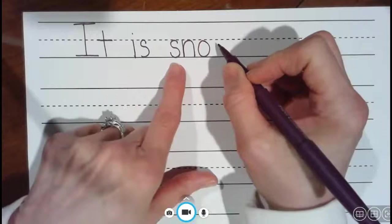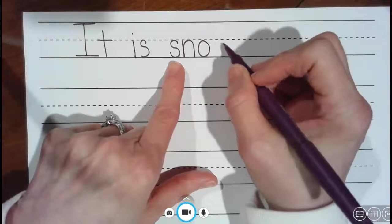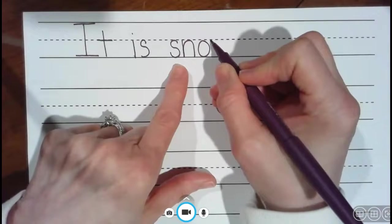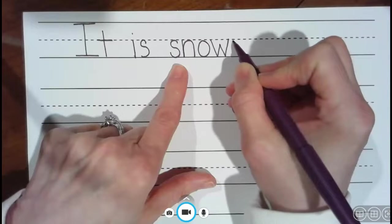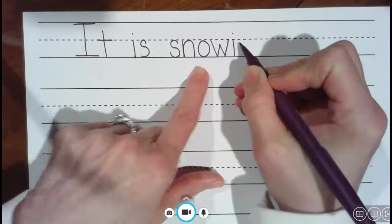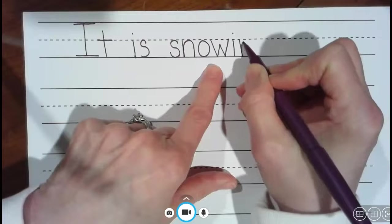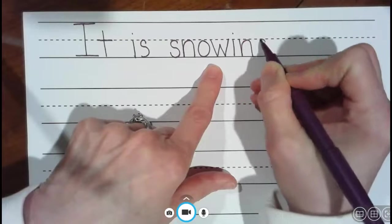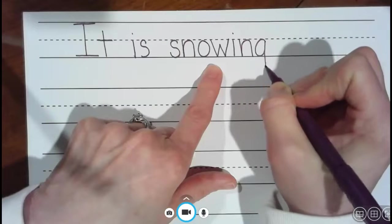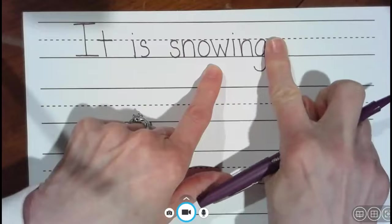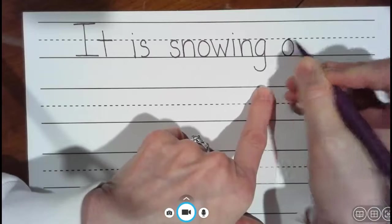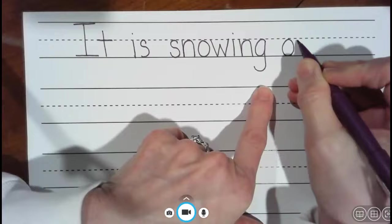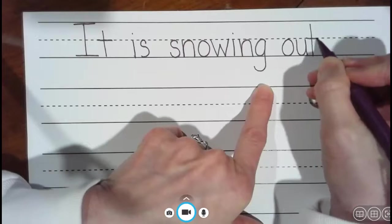If you have trouble spelling things, try to sound out that very first letter. That'll help get you going. So in this one, snow, the very first sound you hear is that S sound. It is snowing, and then I'm going to use my finger to make sure I have my words far enough apart. Outside is a compound word. It's the word out and the word side.